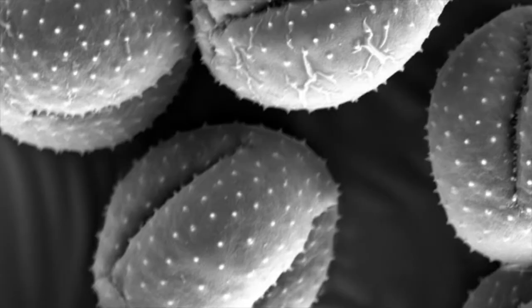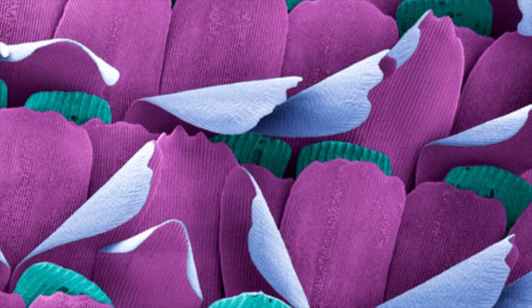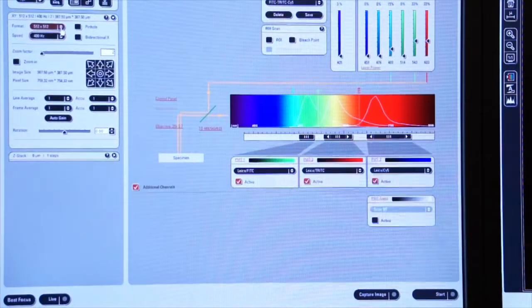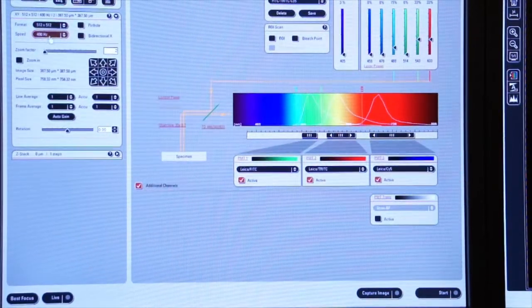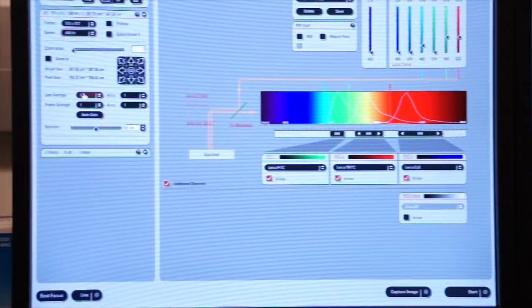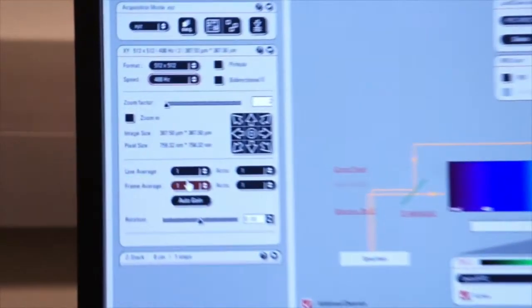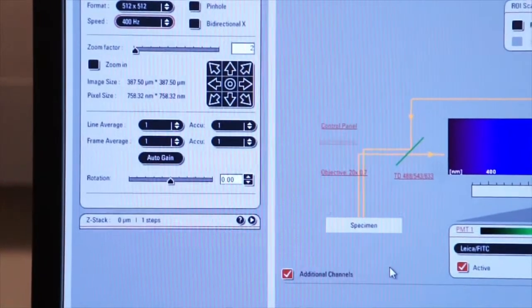Let's discuss improving the quality of our image and trying to get the highest resolution, least noisy image possible. We'll begin with 512 by 512 as you see here on our resolution. Our speed is at 400 hertz and we have not engaged any line or frame averaging.